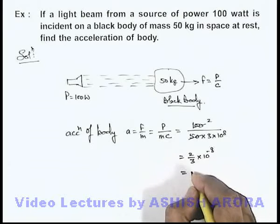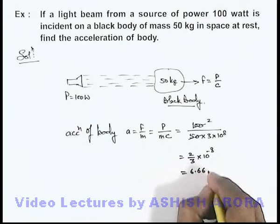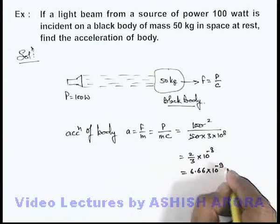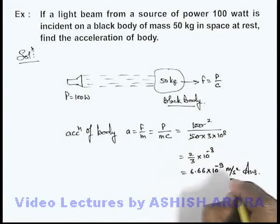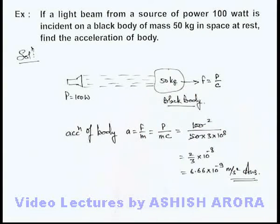Or numerically, we can write it 6.66 into 10 to the power minus 9 meters per second squared. That will be the answer to this problem, the acceleration of this body due to the incidence of light on it.